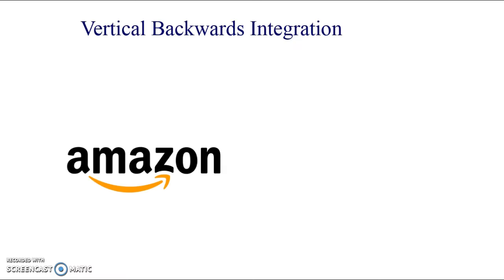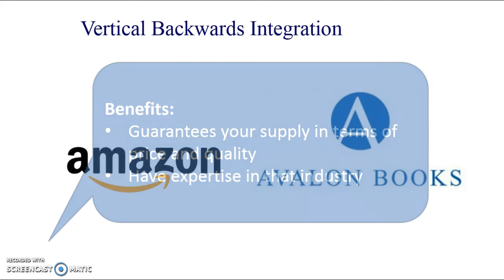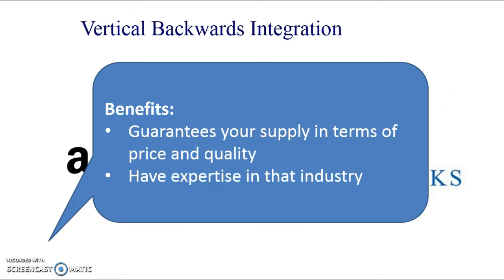An example of backward vertical integration is Amazon buying Avalon Books, a book publisher that publishes romance novels. The benefits are that it guarantees your supply in terms of both price and quality - you are the supplier now, so you have a dedicated supply and can change that product to meet your own needs. You also have expertise in that industry, since you're buying a firm related to your operations.